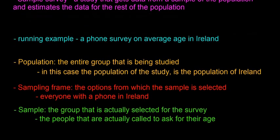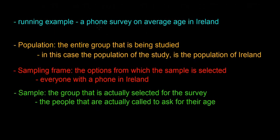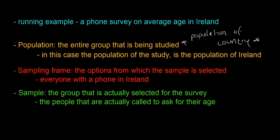Let's go through some of the different terms used for a sample survey. The running example we're going to use is a phone survey on the average age in Ireland. The population for a study is the entire group that is being studied — in this case, the population of Ireland. It's important to note this doesn't need to be the population of a country; it can be the population of a school if you want to find out the average age there.